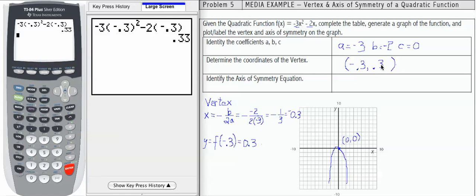Now if I want to put that on my graph, it's going to be that point right there. So after plotting the vertex on your graph, go ahead and label it negative 0.3, 0.3.